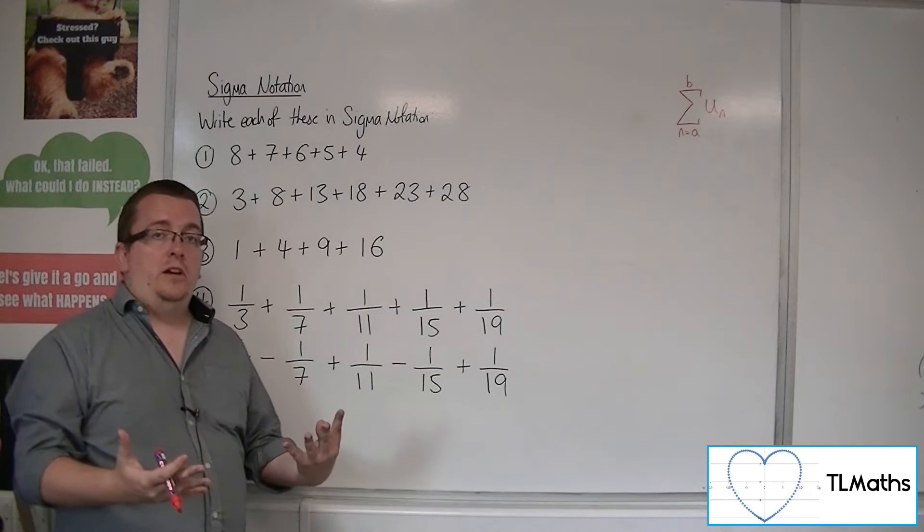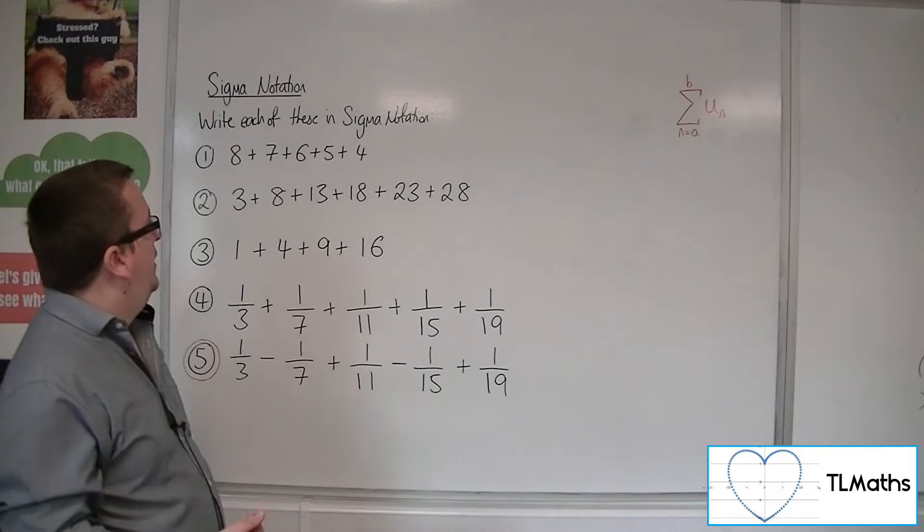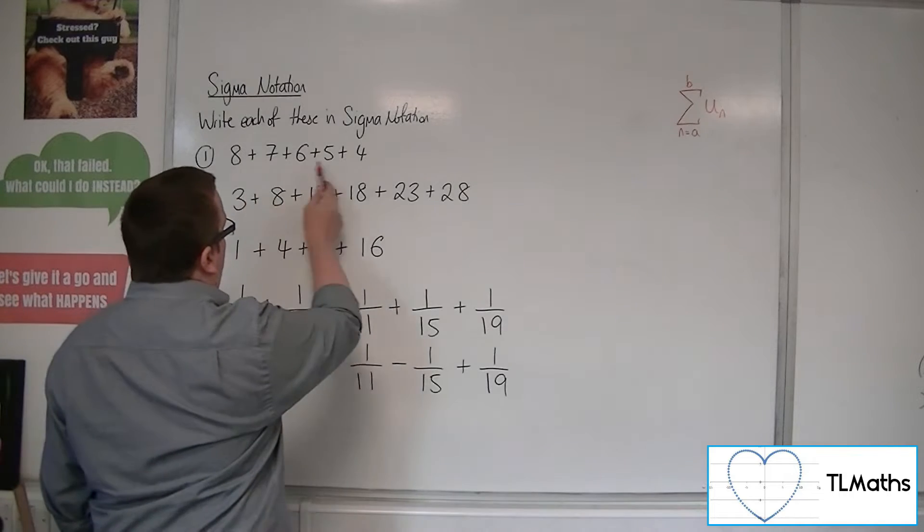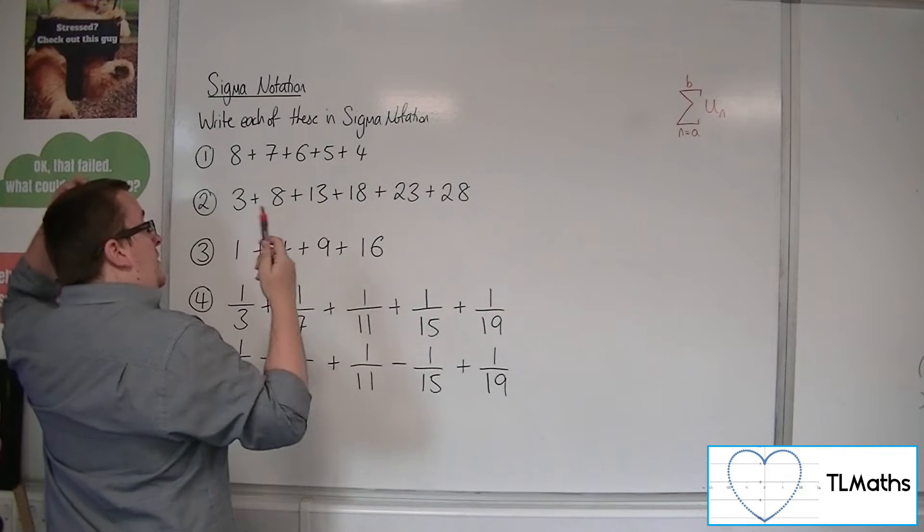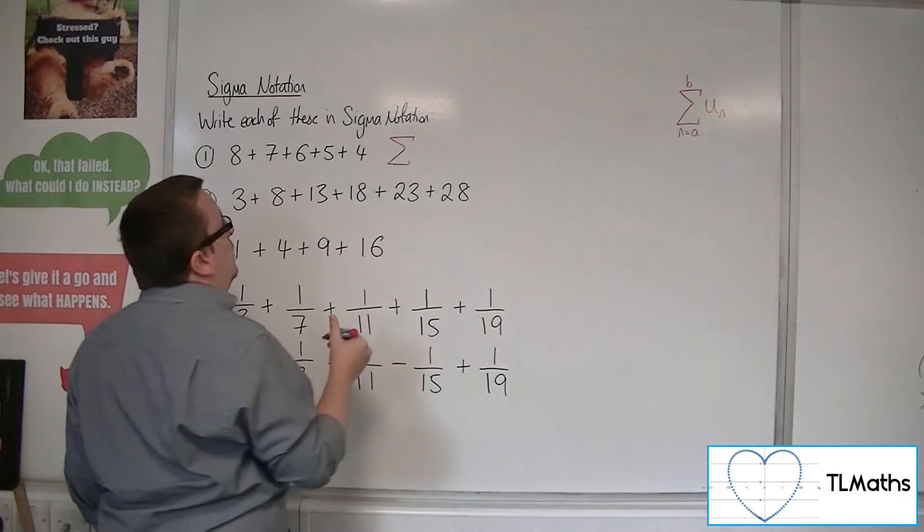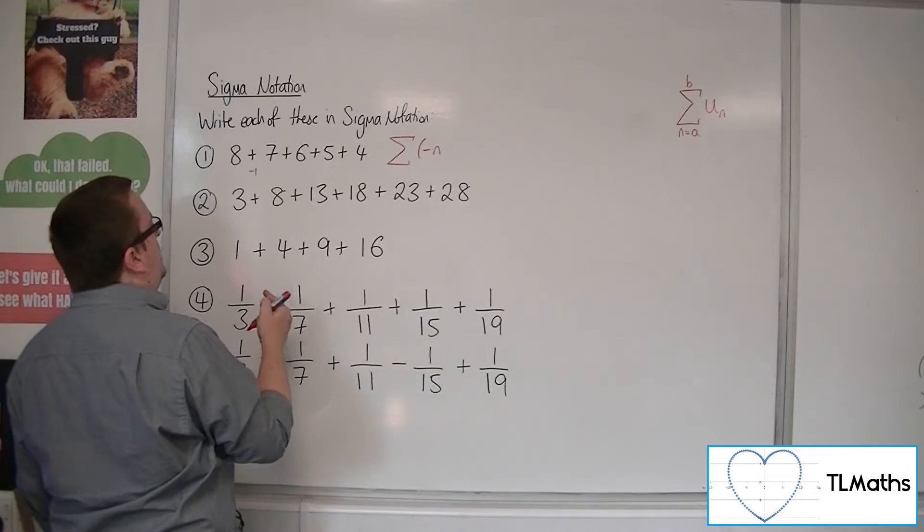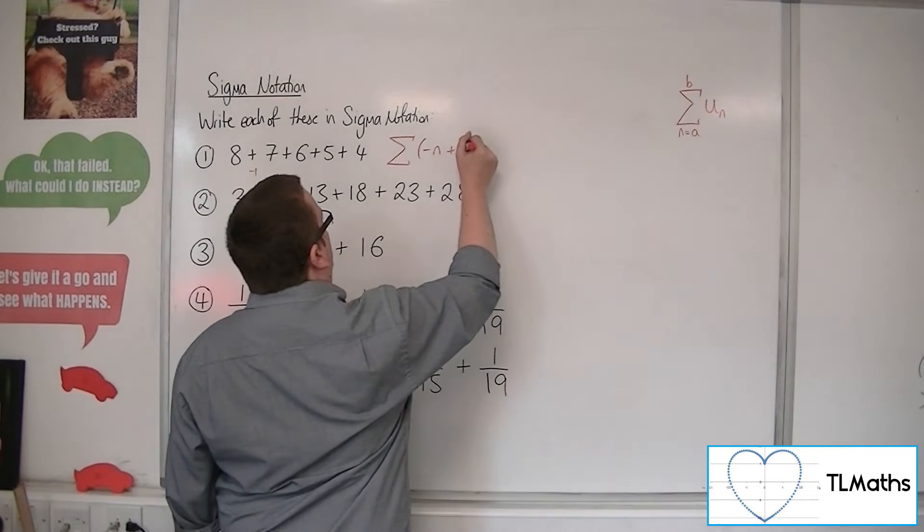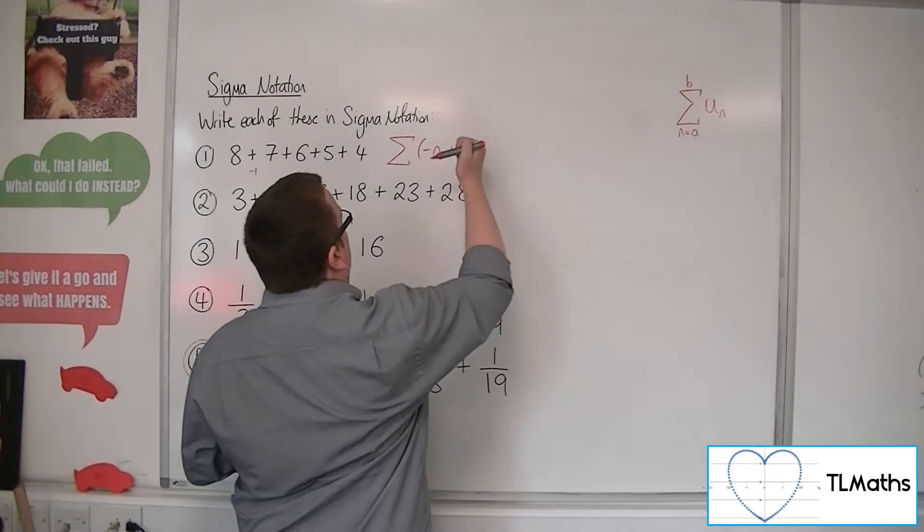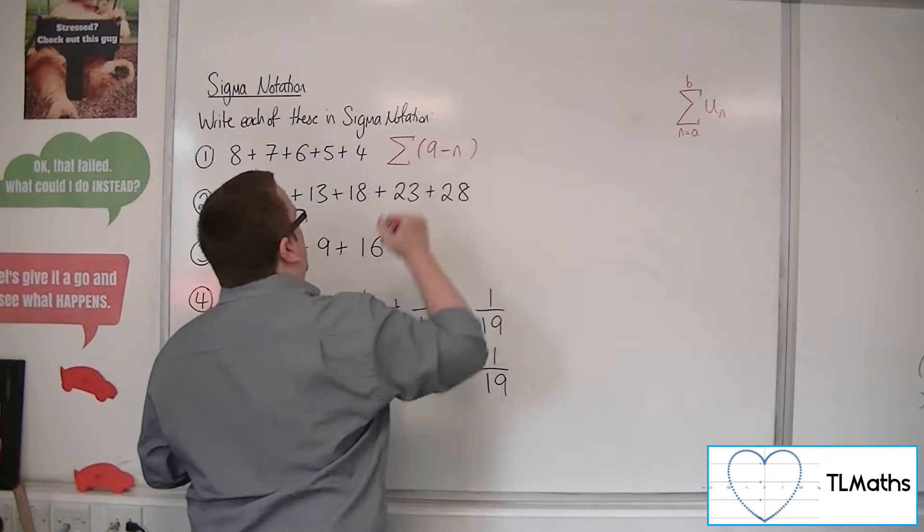Finding the nth term is the first thing that we're going to do. So this first one, 8 plus 7 plus 6 plus 5 plus 4, we can see that we're going down in 1s each time. So we're going to have a minus n. If I put the sigma sign here, we're going to have a minus n. And how do we get from minus 1 back to 8? We've got to add on 9. So you could write it as minus n plus 9 or 9 minus n. Probably nicer as 9 minus n.